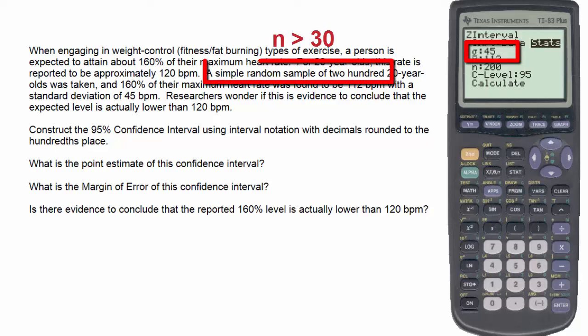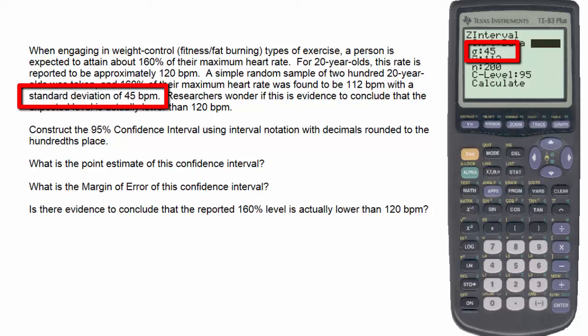since the sample is more than 30, the standard deviation of the sample can be used as a very accurate approximation of the population standard deviation. Therefore, we input the number 45.